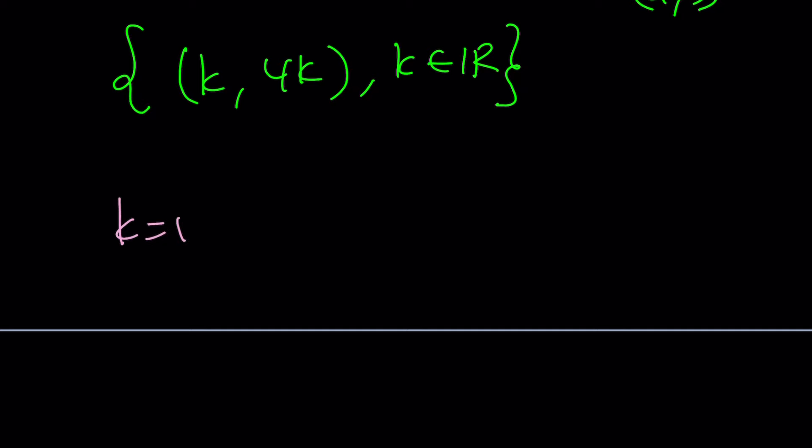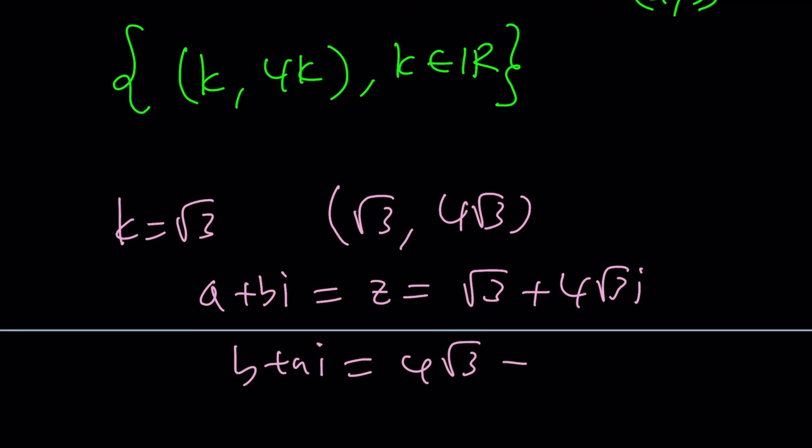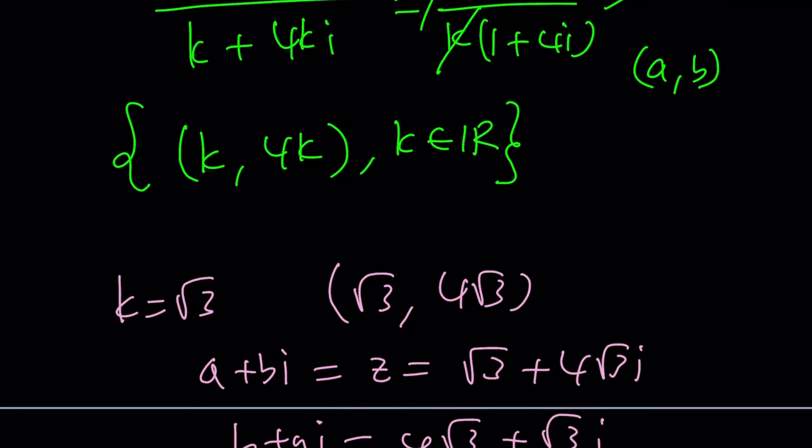if K is equal to root 3, then we're going to have root 3 comma 4 root 3 as a solution. In other words, A plus BI. If you want to call that Z, that's fine. It's going to be root 3 plus 4 root 3i. In which case, B plus AI is just going to be 4 root 3 plus root 3i. And you can go ahead and plug these in to see that they actually work.